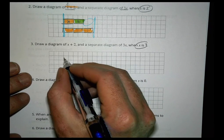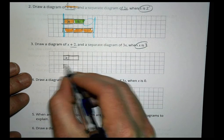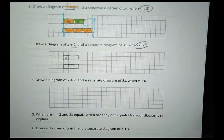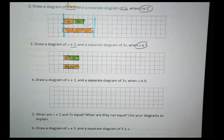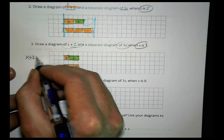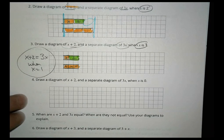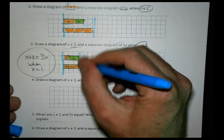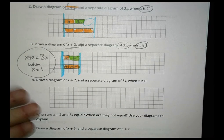What happens when x has a value of 1? We do one x, then add 2: 1, 2. And x has a value of 1, so we do 1, 2, 3 for 3x. When x equals 1, we can see that the two expressions, x plus 2 and 3x, are equivalent for that value — meaning x plus 2 does equal 3x when x equals 1. The bar starts at the same spot and ends at the same spot. That was not the case with any of the other values.